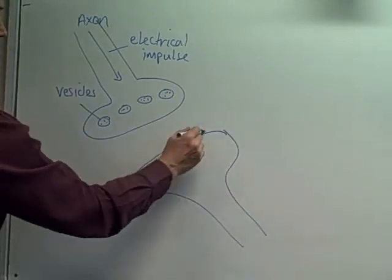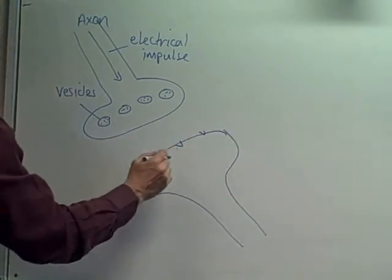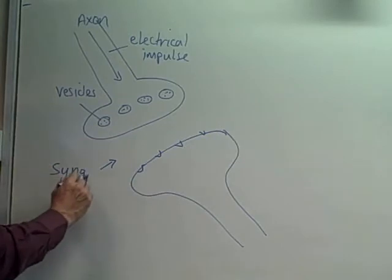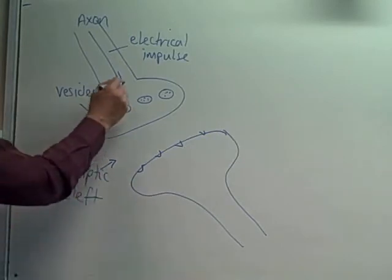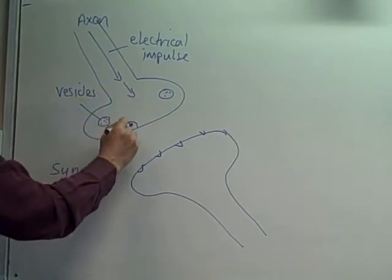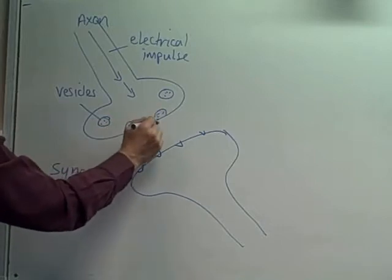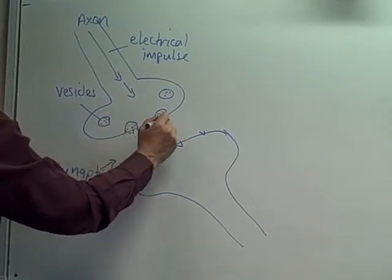These vesicles contain the neurotransmitter that will carry the message across the gap to the second neuron. For these vesicles to carry the message across the synaptic cleft, the axon needs to receive the electrical impulse.